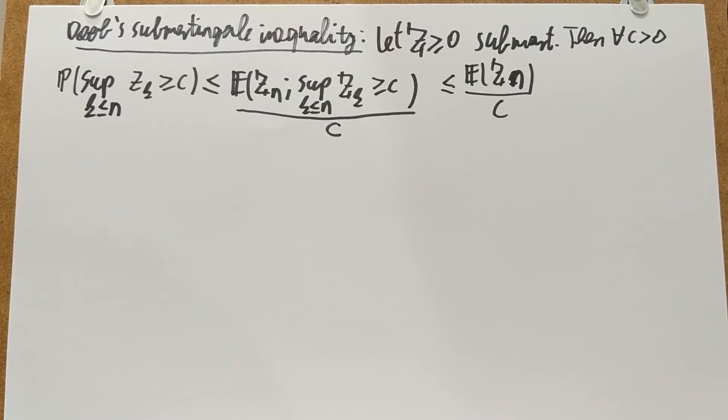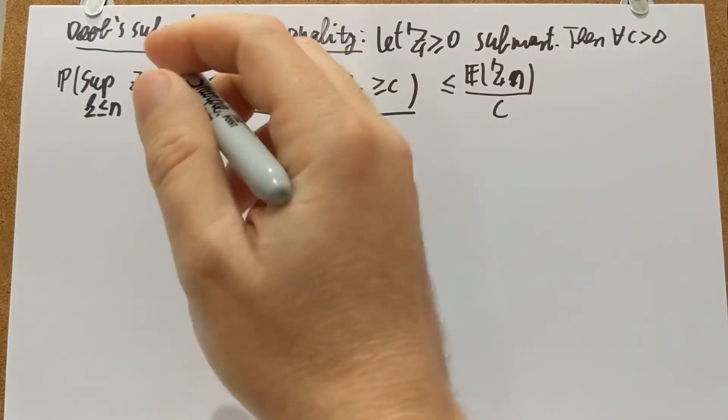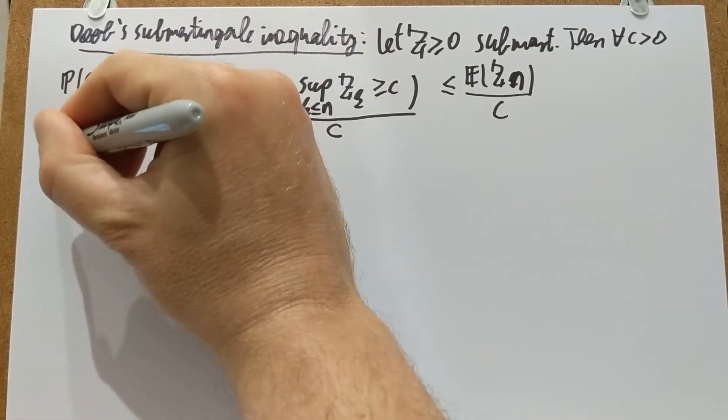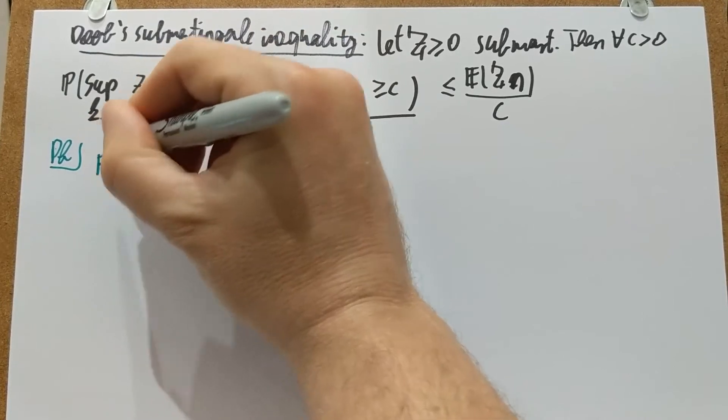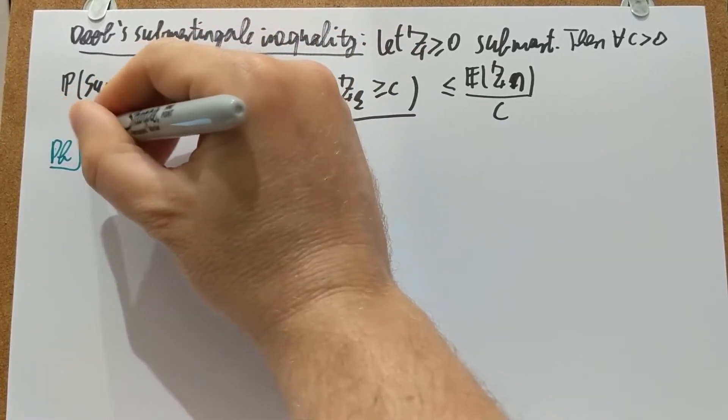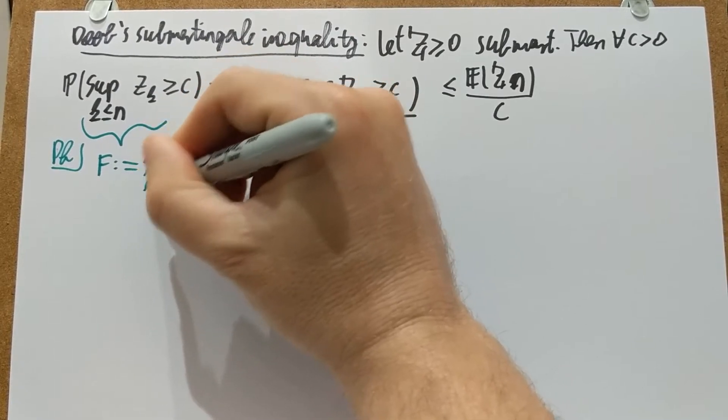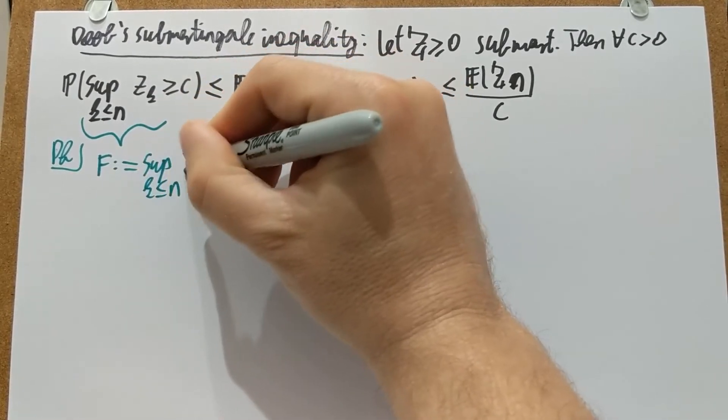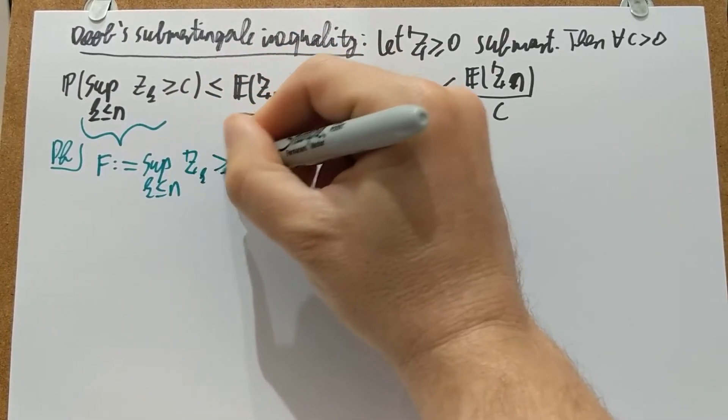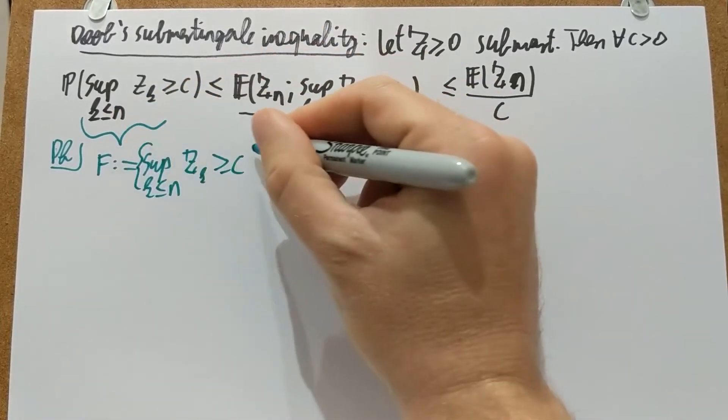Okay, so let's do that. And the way to do this is just breaking up the event which we see on the left-hand side. So the proof is going to be following: define exactly this event here, that the supremum up to N of Z_K is at least C. So that's an event, call it F.